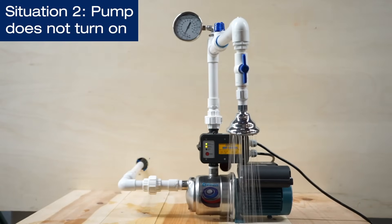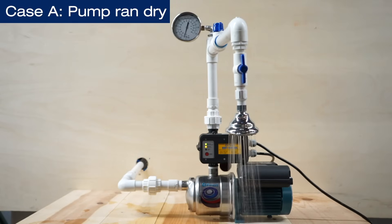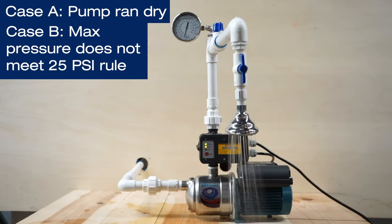There are a couple of reasons why the pump would be in failure mode. Either A, the pump ran dry, or B, the pump's maximum pressure does not meet the 25 psi rule.